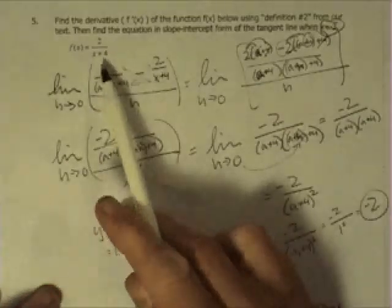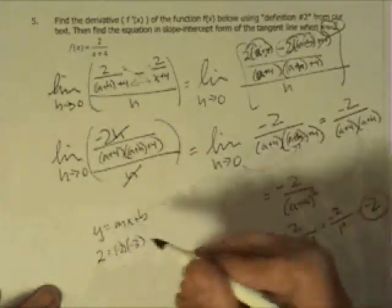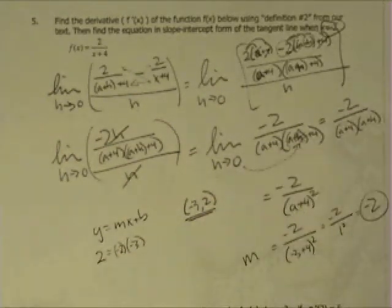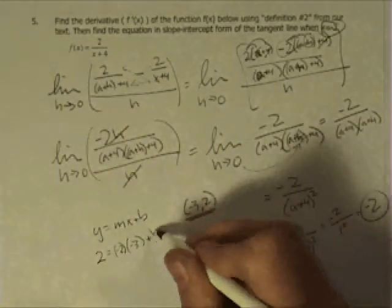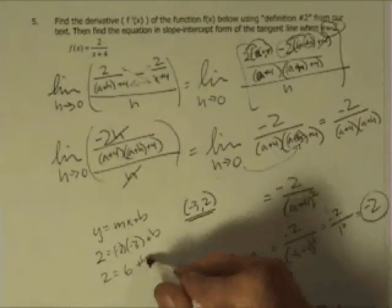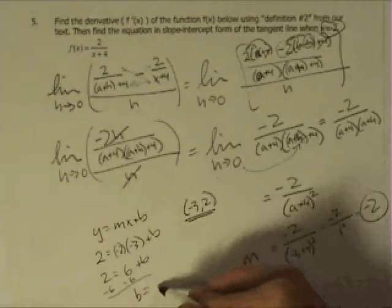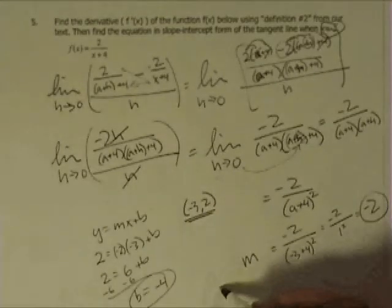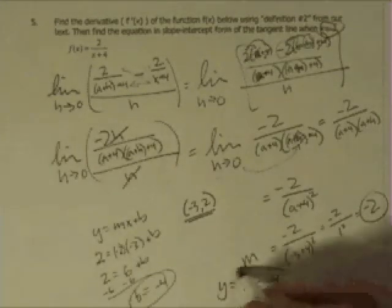When I plug in negative 3 and evaluate it, that's 2 over, again, negative 3 plus 4 is 1. 2 over 1 is 2 for the y, right? We're really talking about the point that's negative 3 comma 2. I don't know if that's totally obvious to you, but it hopefully is when you plug it in and evaluate it, and then it's the b that I don't know. So 2 equals positive 6 plus b, so subtract 6, and b equals negative 4. So then my final equation is y equals negative 2x minus 4.